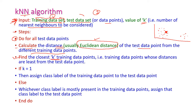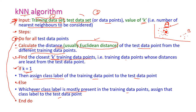Find the closest K training data points. If K equals 1, assign the class label of the nearest training data point to the test data point. For example, if the closest point belongs to class A, then class A is assigned to the new data point. Otherwise, whichever class label is most present among the K nearest neighbors — majority voting — is assigned. This is repeated until all data points in the training set are considered.